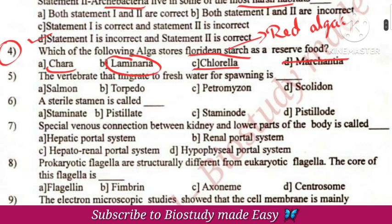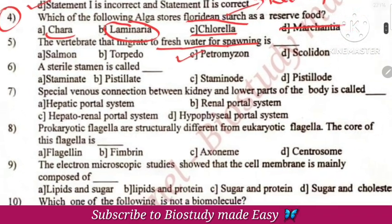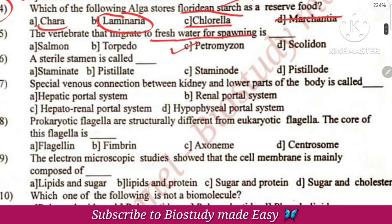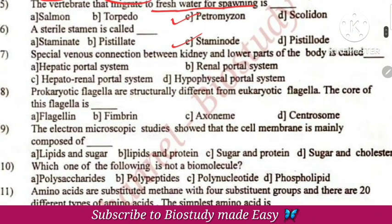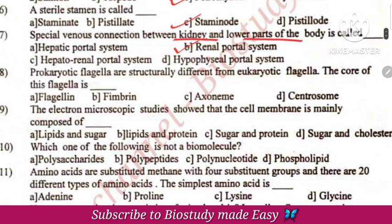The vertebrate that migrates to fresh water for spawning is Petromyzon — a cyclostome. This is a sterile staminode. The venous connection between the kidney and lower parts of the body is the renal portal system.